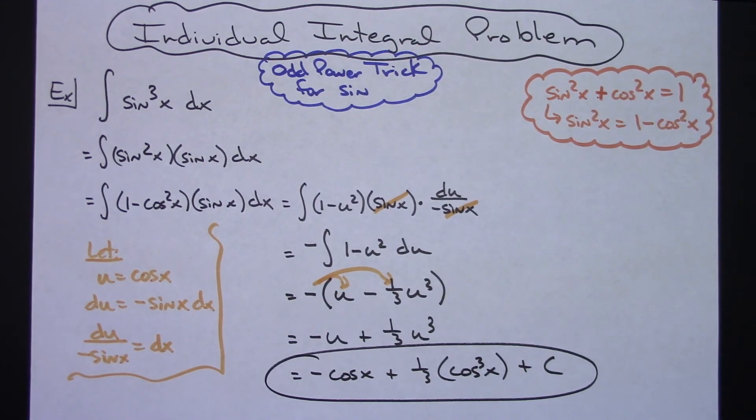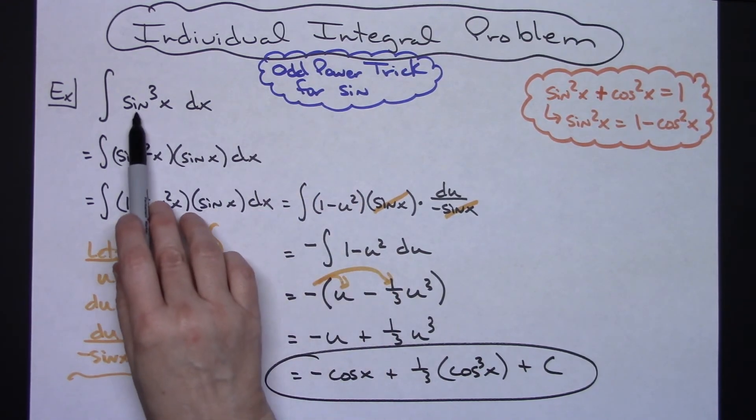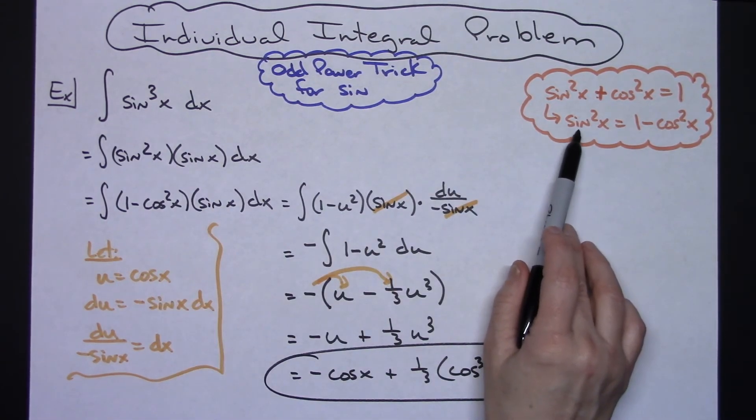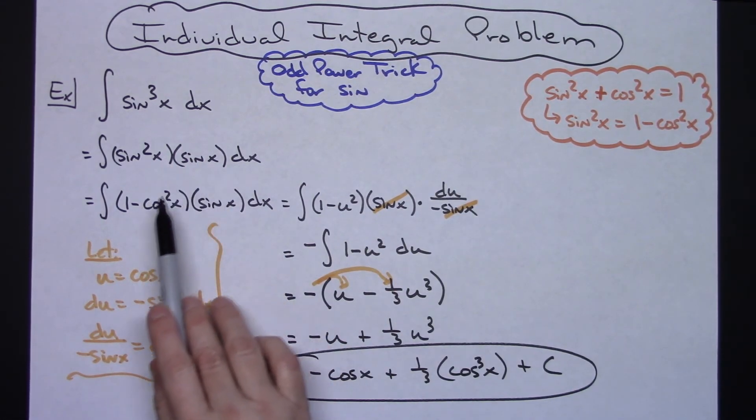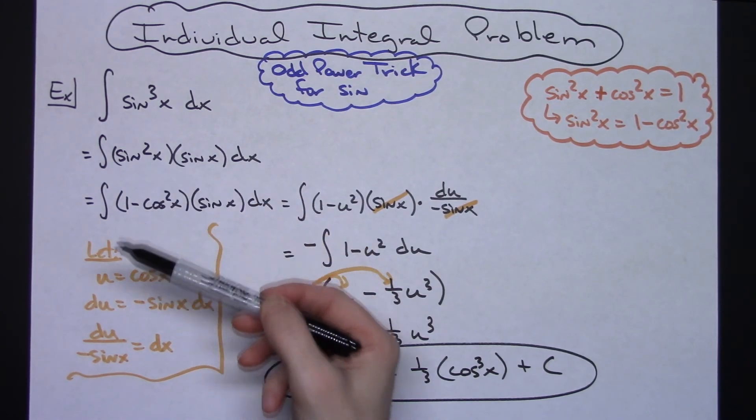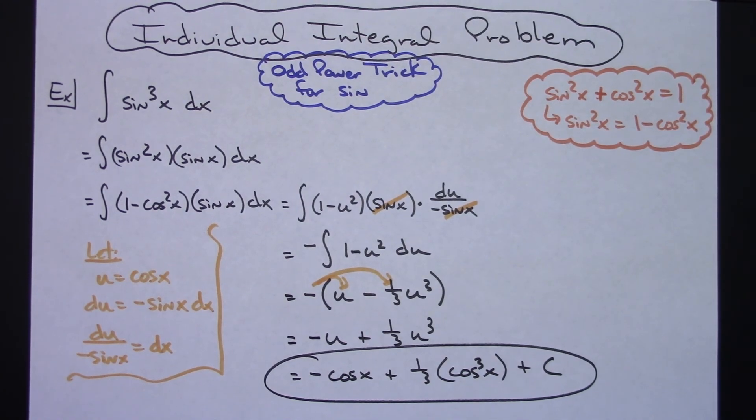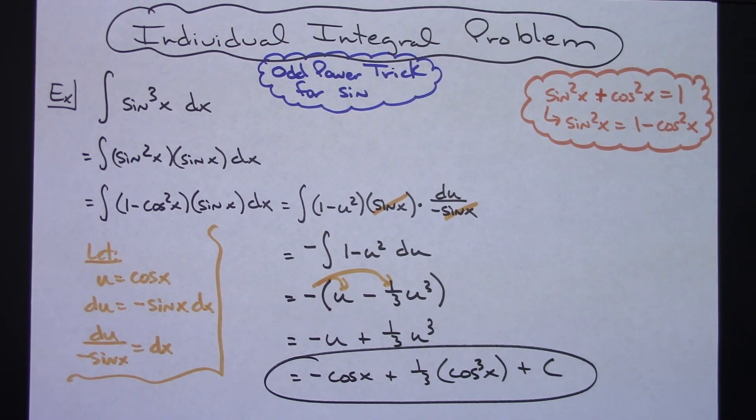Just a nice useful little trick. If you've got an odd power of sine and you can rewrite it so you can get a sine squared x in there, then it's going to allow for a nice substitution that's probably going to help on that integral problem. Thanks for watching, and don't forget to subscribe to the channel. Thanks!